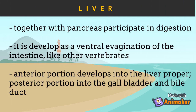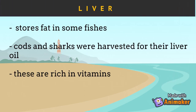The liver is developed as a ventral evagination of the intestine, like other vertebrates. The anterior portion develops into the liver proper, while the posterior portion develops into the gallbladder and bile duct. The liver also stores fat in some fishes. Cods and sharks are harvested mainly for their liver oil, which is rich in vitamins, especially squalene.